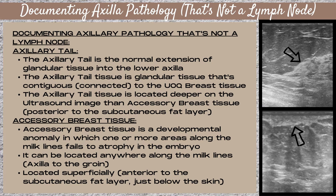Now let's talk about accessory breast tissue. Accessory breast tissue is a developmental anomaly in which one or more areas along the milk lines fails to atrophy in the embryo. Accessory breast tissue can occur in males and females. When the embryo is developing during weeks five to six, streaks develop from the axilla to the groin and evolve into mammary ridges known as the milk lines.